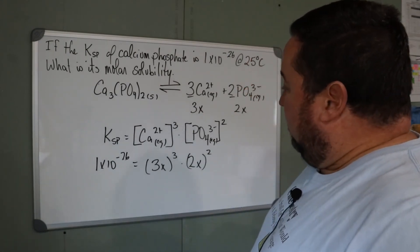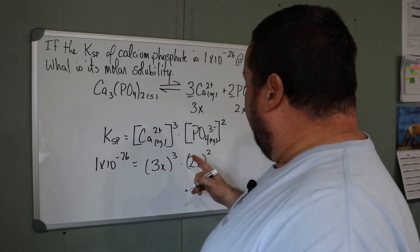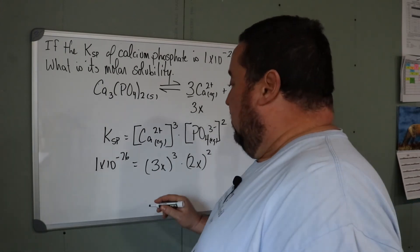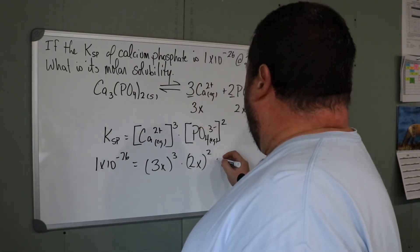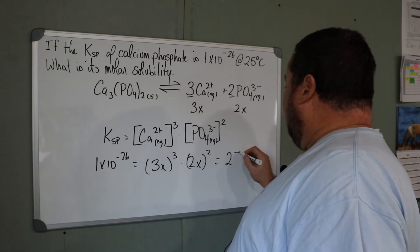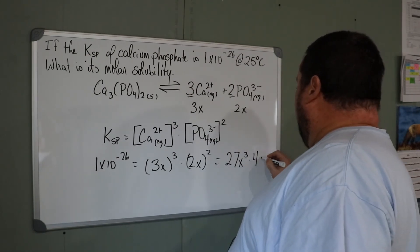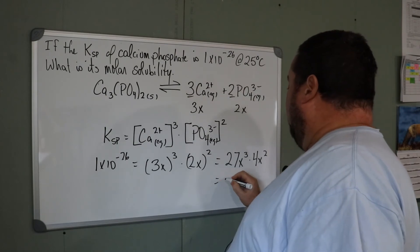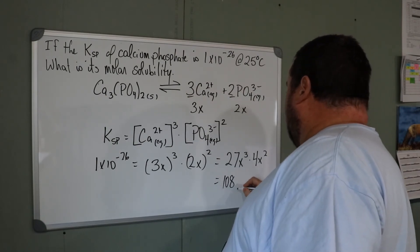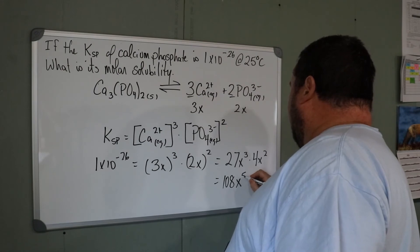Once again, don't forget to use your brackets and to cube or square everything inside of it. So we have 27X cubed times 4X squared, or 108X to the 5th.